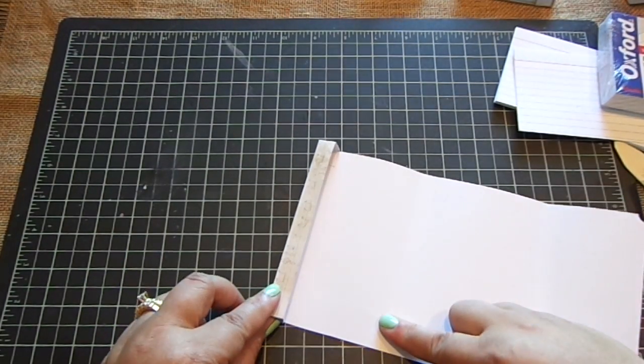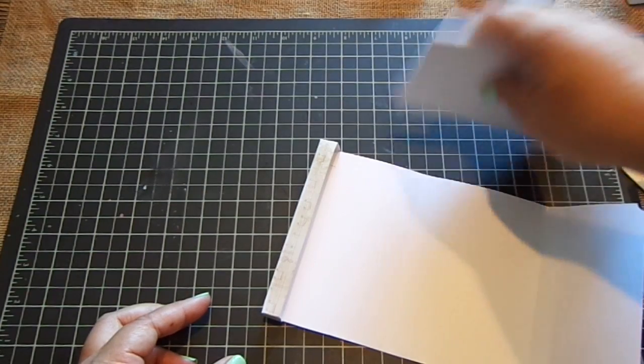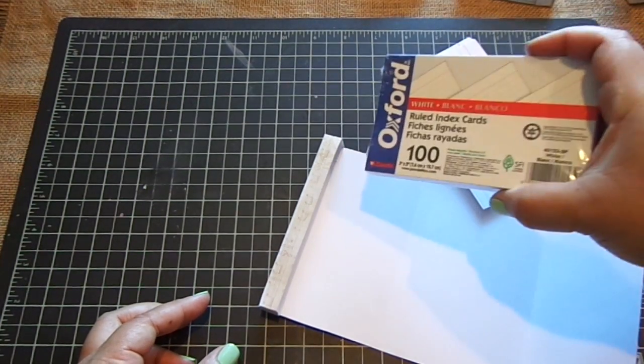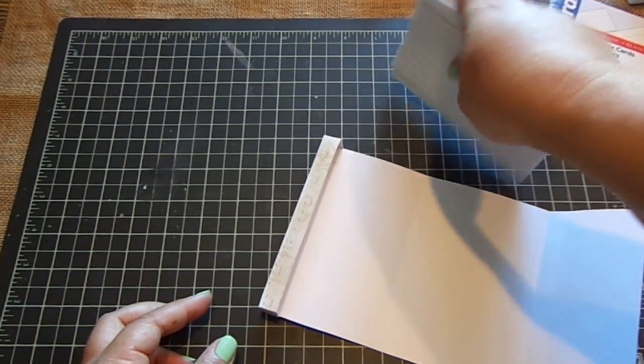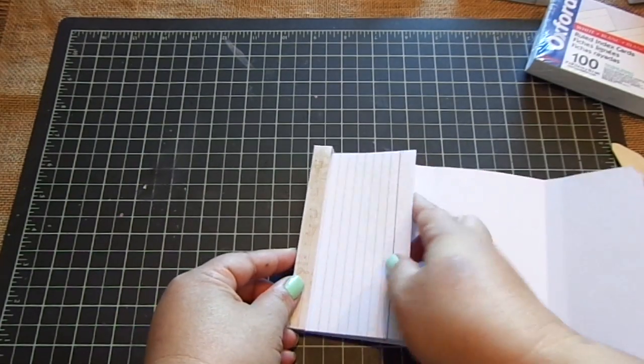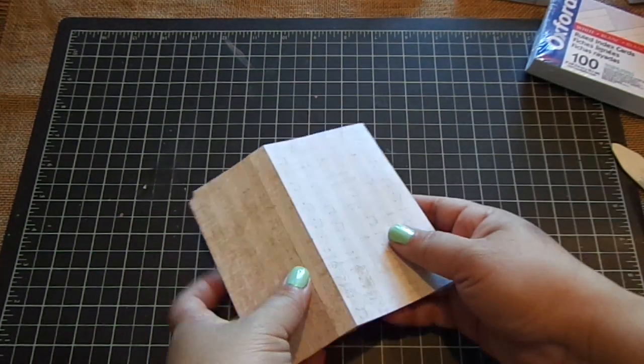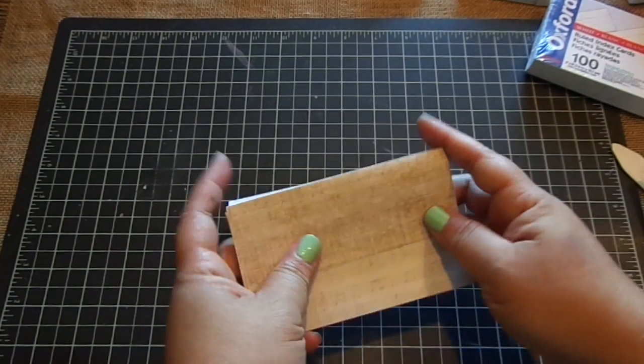And then you just take your index cards. And you could buy a pack of these pretty much anywhere. Comes in a pack of a hundred. And then they just fit in perfectly. And then you just close your little book. Like so.